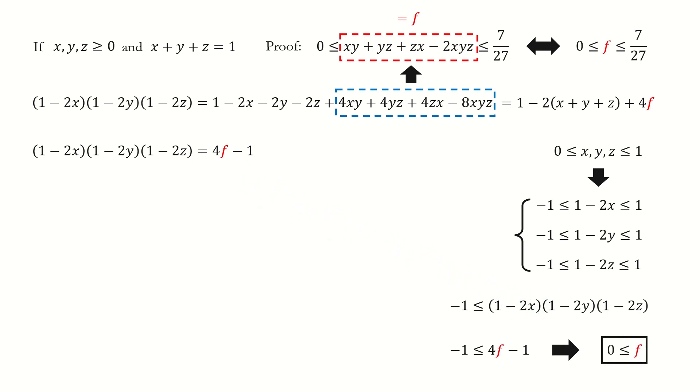Now let's look at the upper bound. Here we use the AM-GM inequality. For the left-hand side, we replace the product with 4f minus 1.